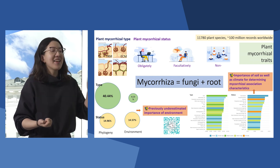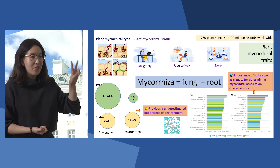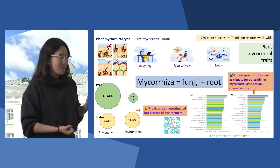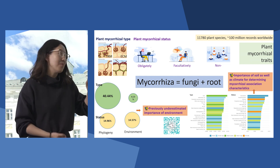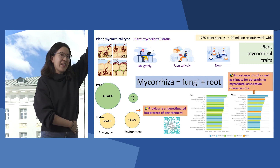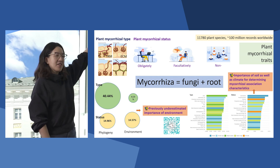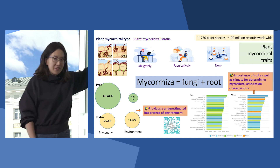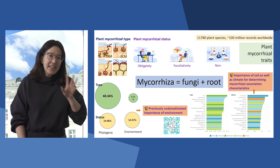And yes, we are right — and we have two very novel findings. First, for mycorrhizal type, phylogeny is outstanding. But for mycorrhizal status, phylogeny and environmental conditions are of similar importance.